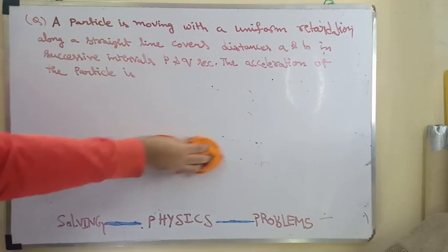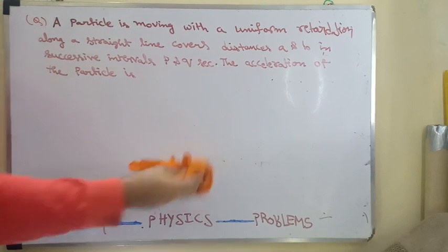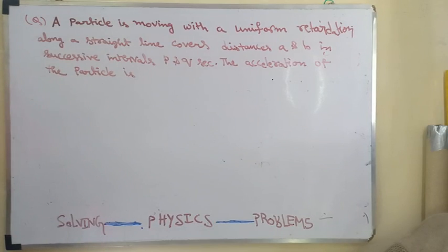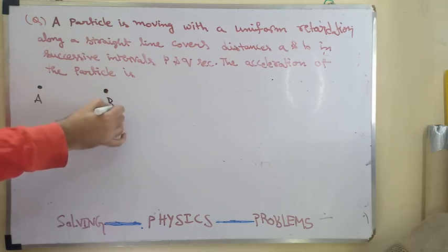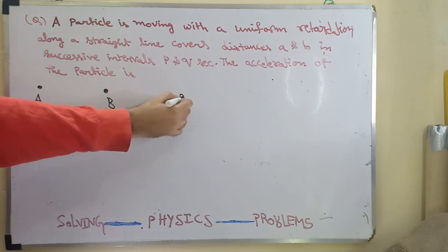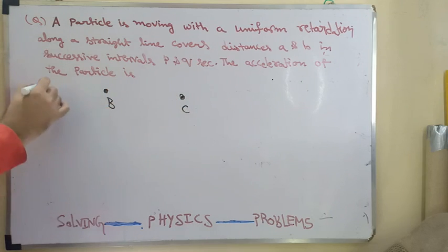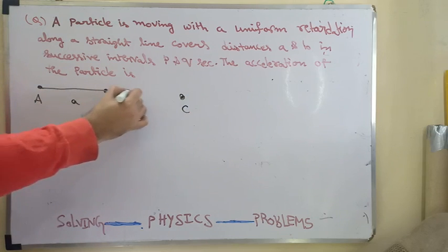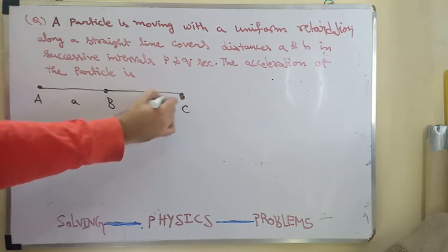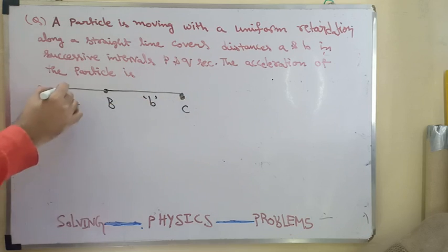Let's write the information first. What is the information given is that this is point A, point B, and point C. Three points are there. Assume that AB distance is small a and BC distance is small b.